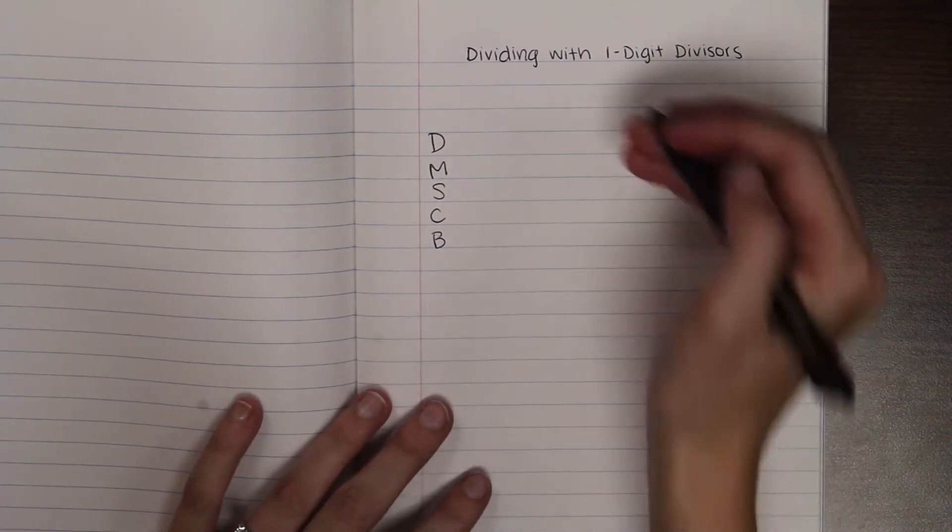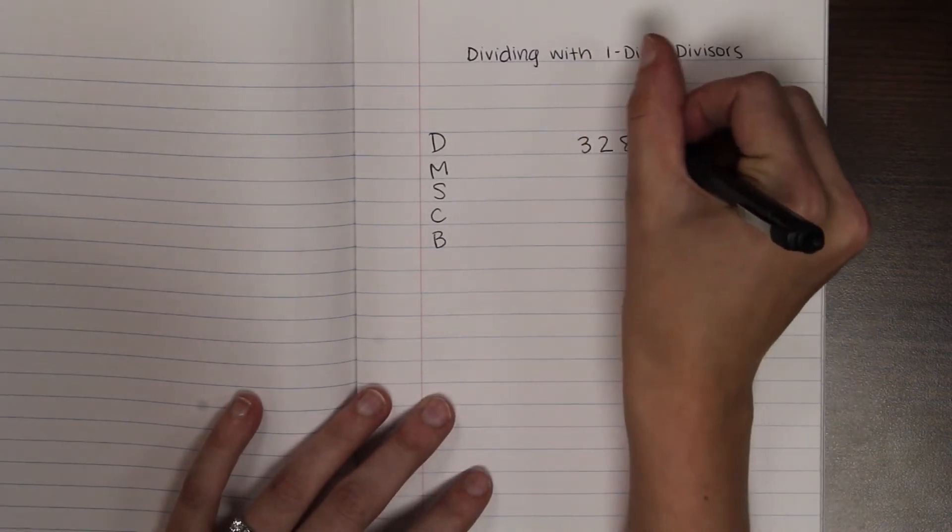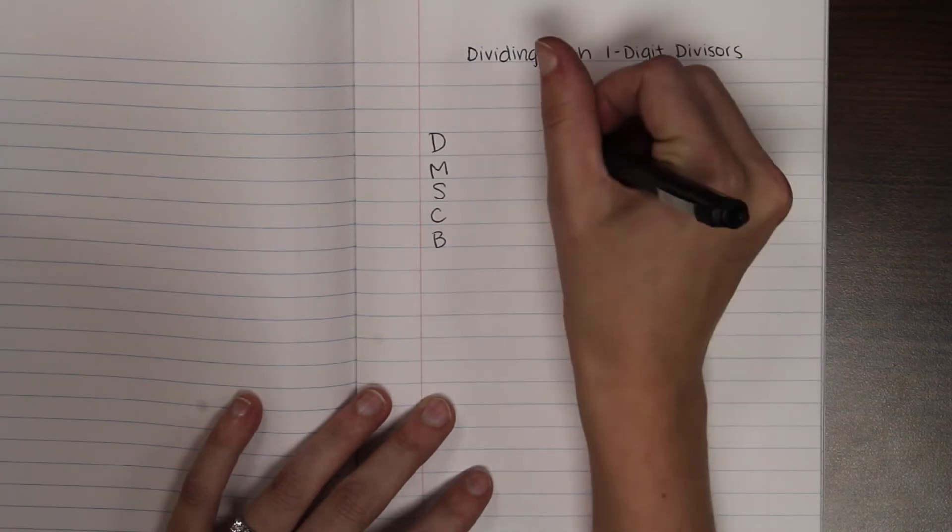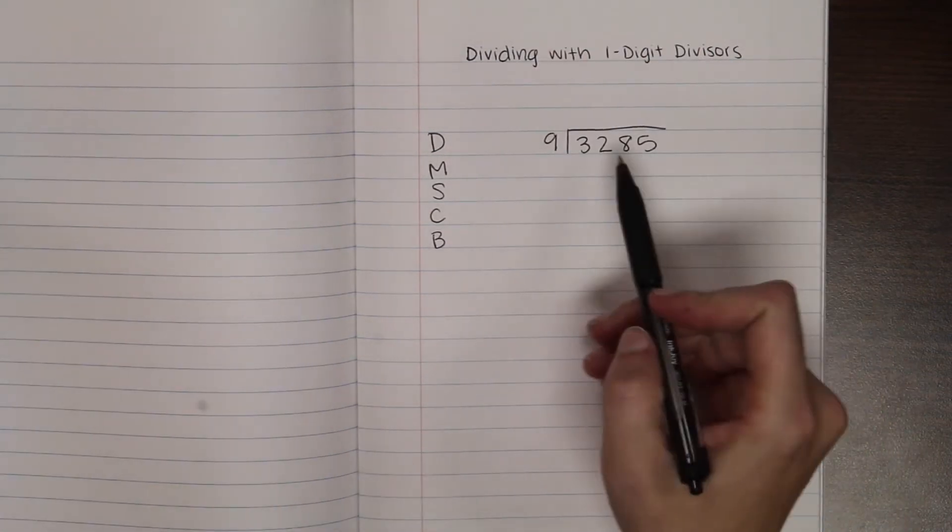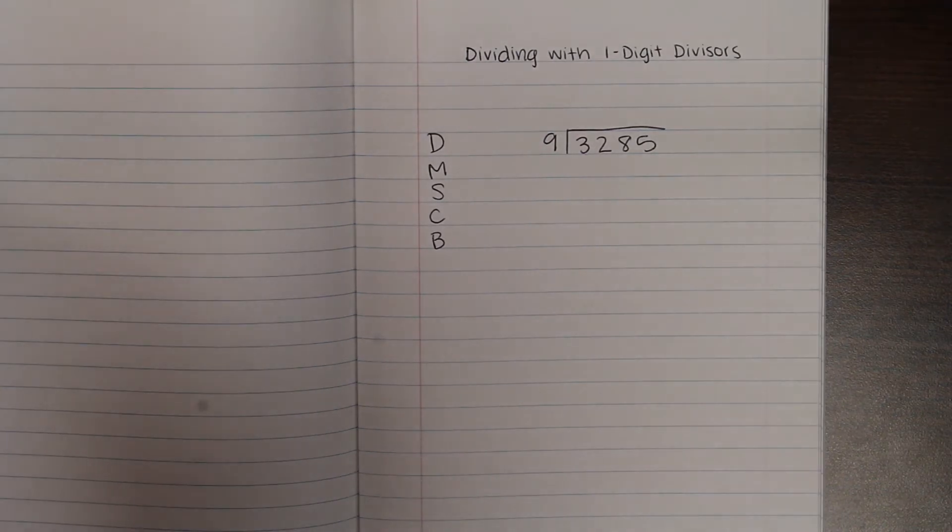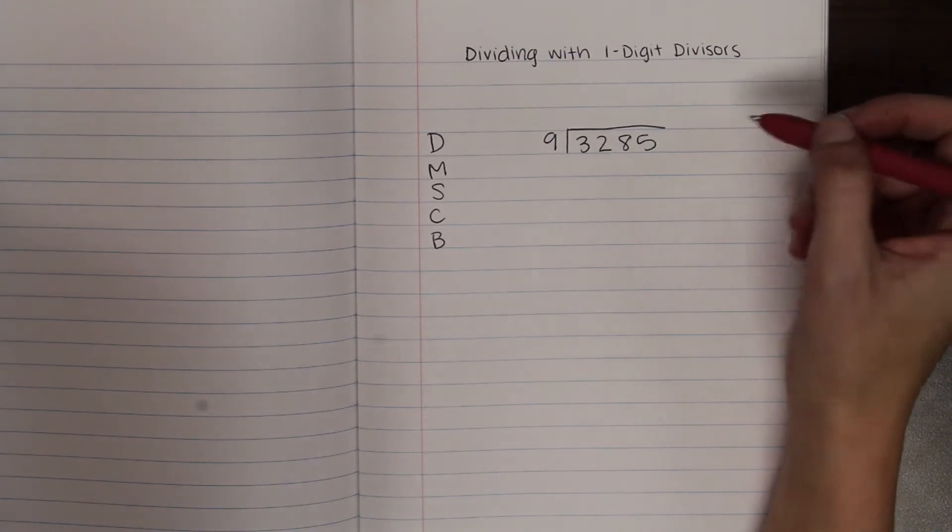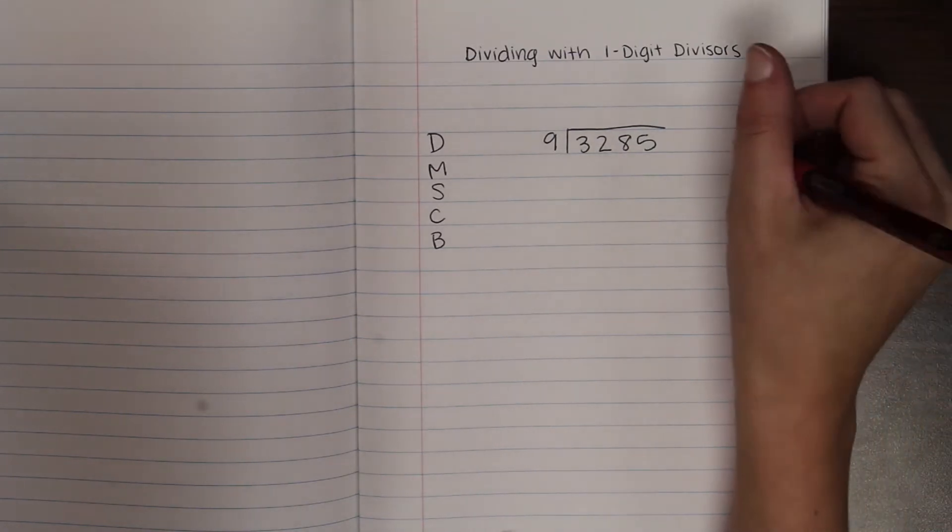So the problem I'm going to model for you today is 3,285 divided by 9. So notice when I write this I space my number out. I don't squish it all together. That kind of helps me line up my place value positions and not do anything funky. Alright, so the first thing I'm going to do is I'm going to list my multiples of 9 to the side just in case I don't know those facts.